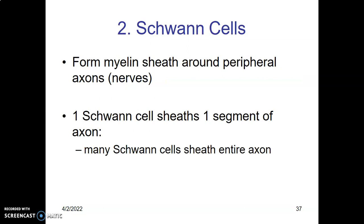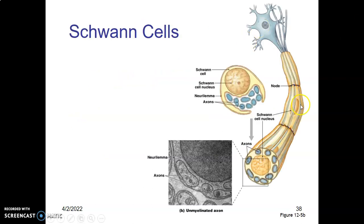Schwann cells form the myelin sheath around nerves of the peripheral nervous system. A Schwann cell wraps its cell membrane around an axon to form myelin. The myelinated portions are called internodes, and these are interrupted by the nodes of Ranvier, which are unmyelinated. You can see the Schwann cell has wrapped its cell membrane, giving a whitish appearance to the axons of the neurons.